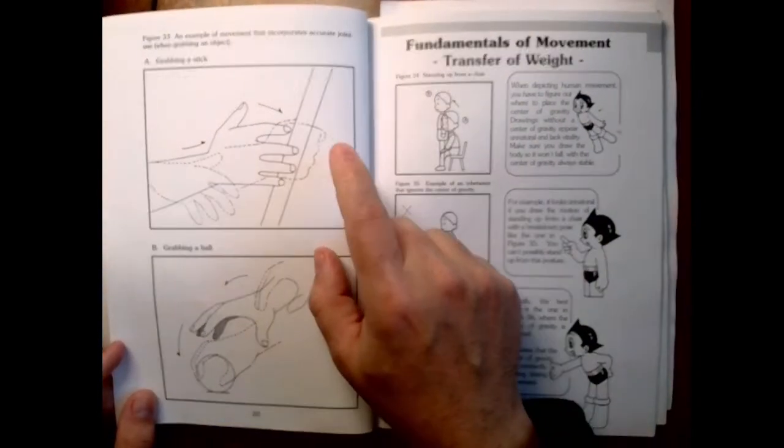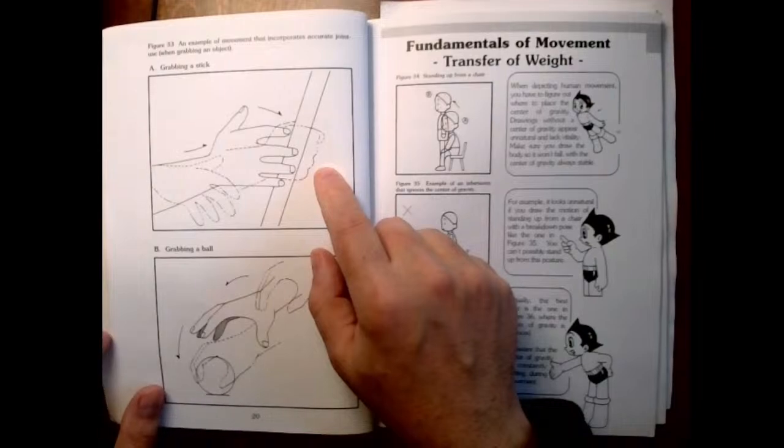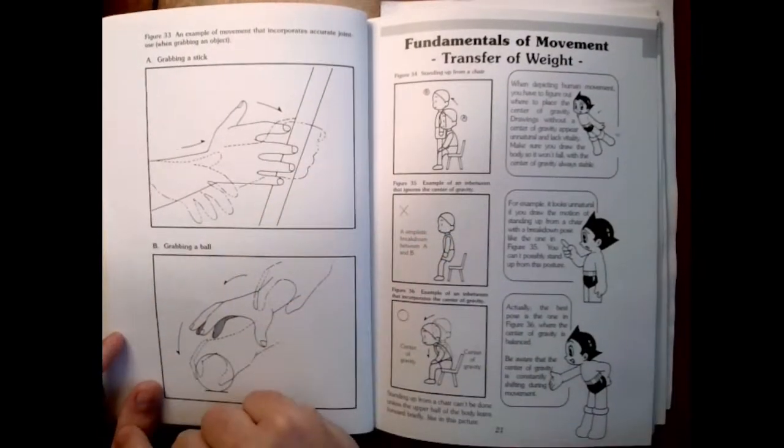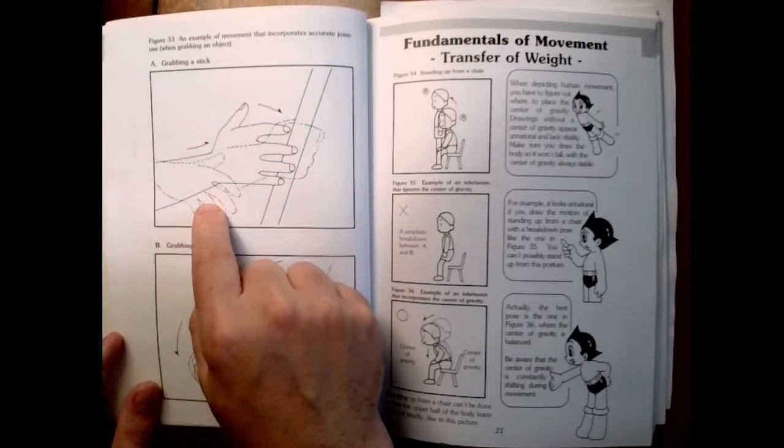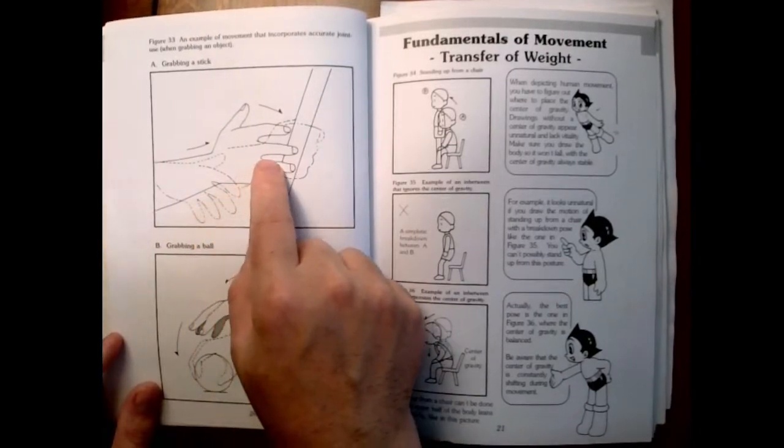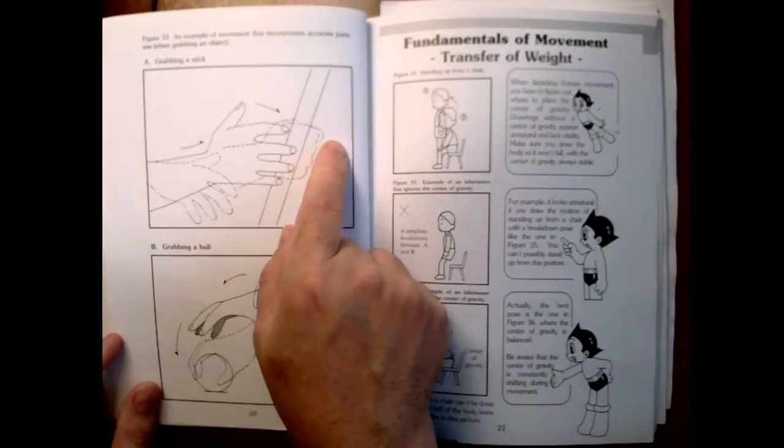This is an example of movement that incorporates accurate joint use when grabbing an object. This is basically just like drag. The arm is down, like anticipating before it goes up, and then it grabs.